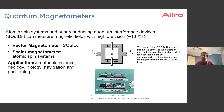Note that the SQUID is directional, so its orientation will determine the magnitude of the magnetic field it measures. Whereas atomic spin systems are scalar magnetometers, meaning they output a magnitude regardless of their orientation.